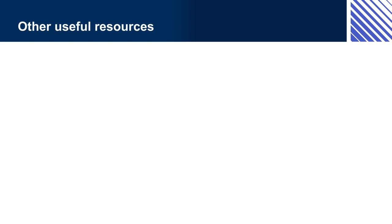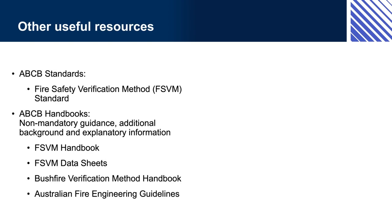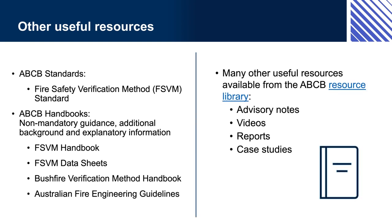Other useful resources. There are some ABCB standards related to fire safety, particularly for NCC Volume 1. As with all other reference documents, these are not mandatory but may be used to comply depending on the pathway chosen. One example is the ABCB Fire Safety Verification Method Standard. The ABCB also provides a range of handbooks containing non-mandatory guidance information, as well as case studies, videos, and other resources available from the ABCB website. These do not contain any mandatory requirements.